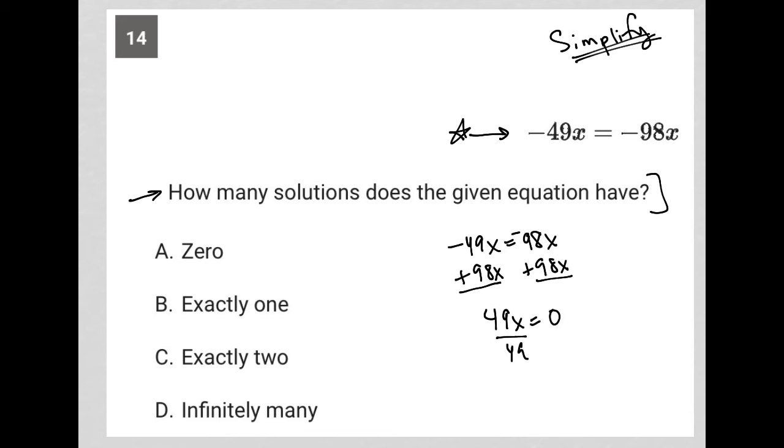Of course, then I can divide by 49 on both sides, and I get x is equal to zero. So there is exactly one solution to this question, and therefore choice B is correct.